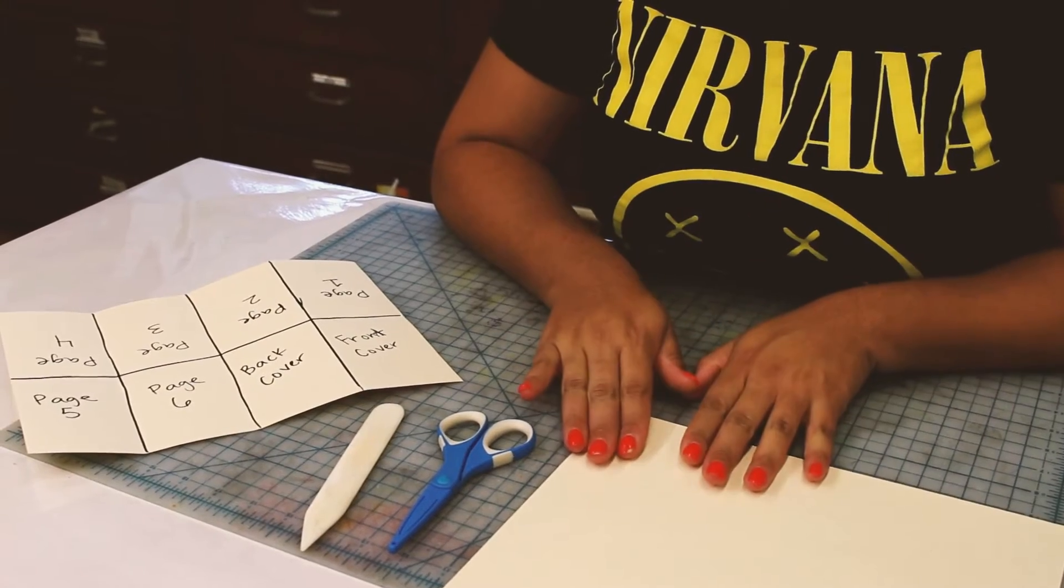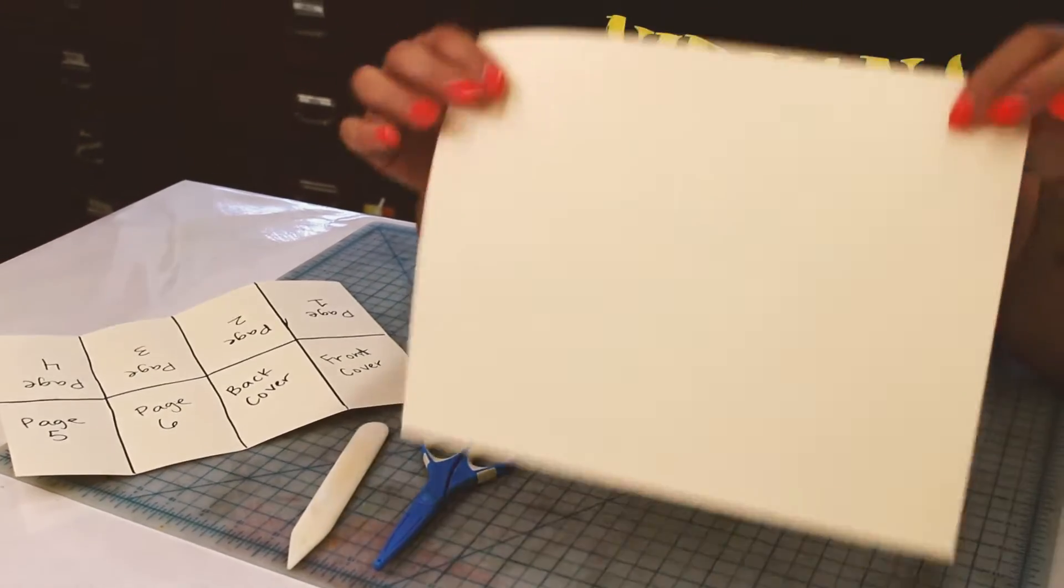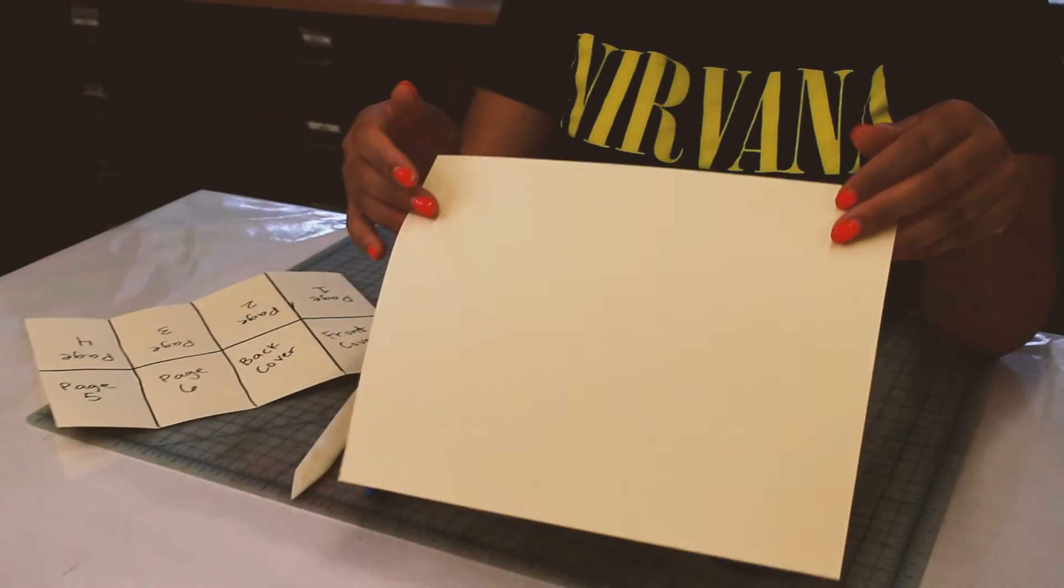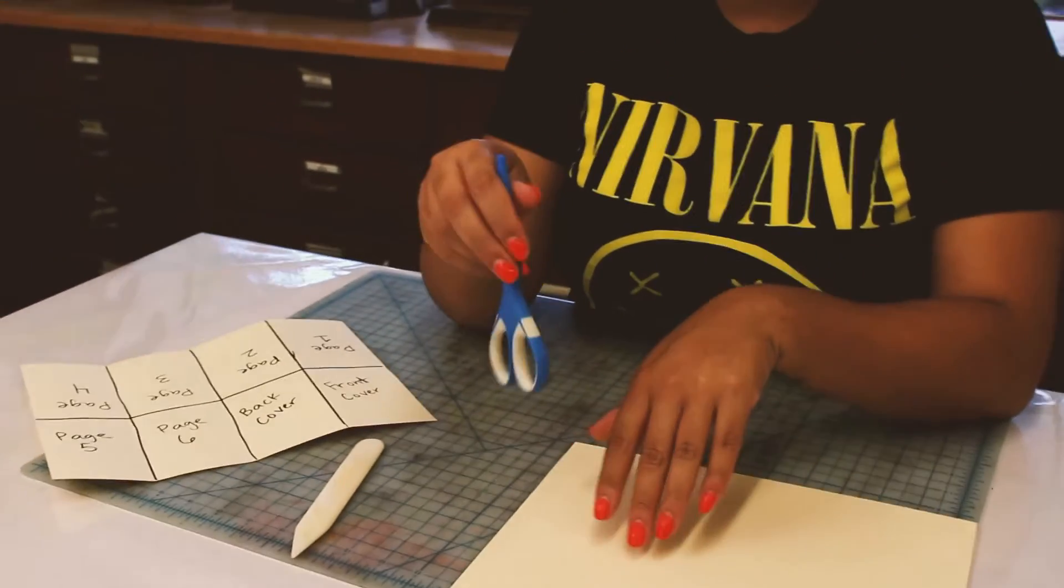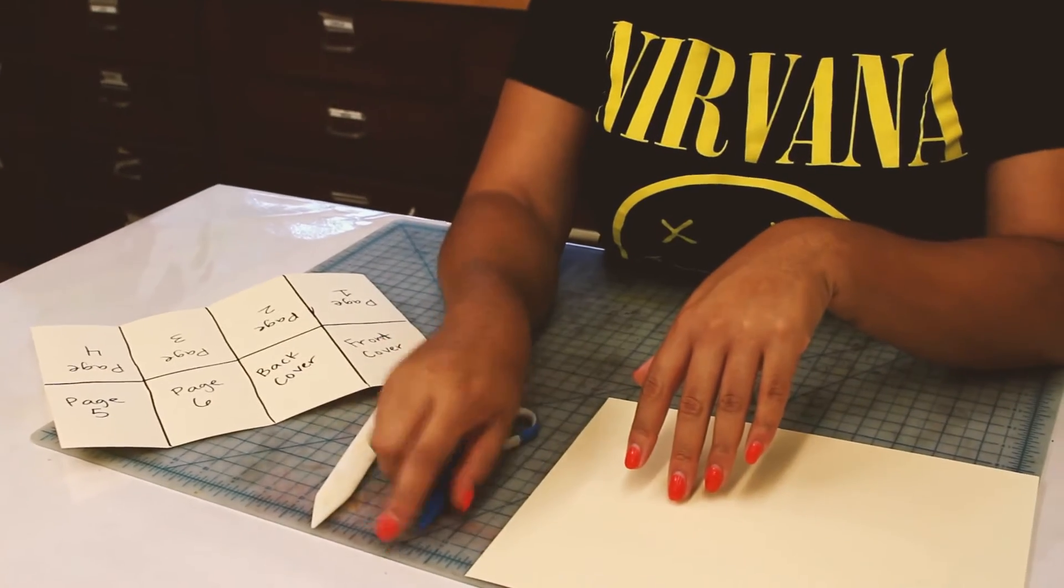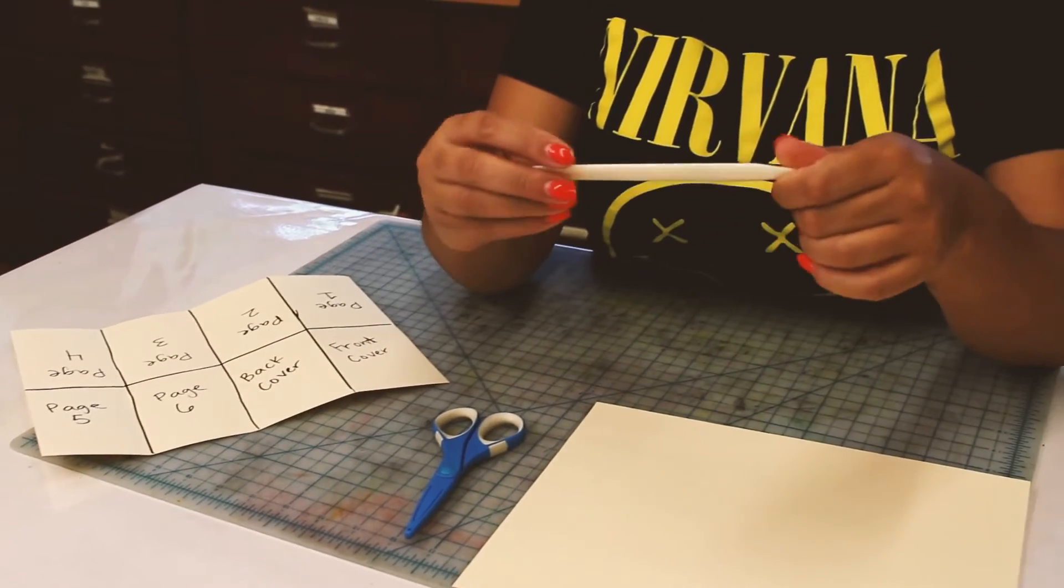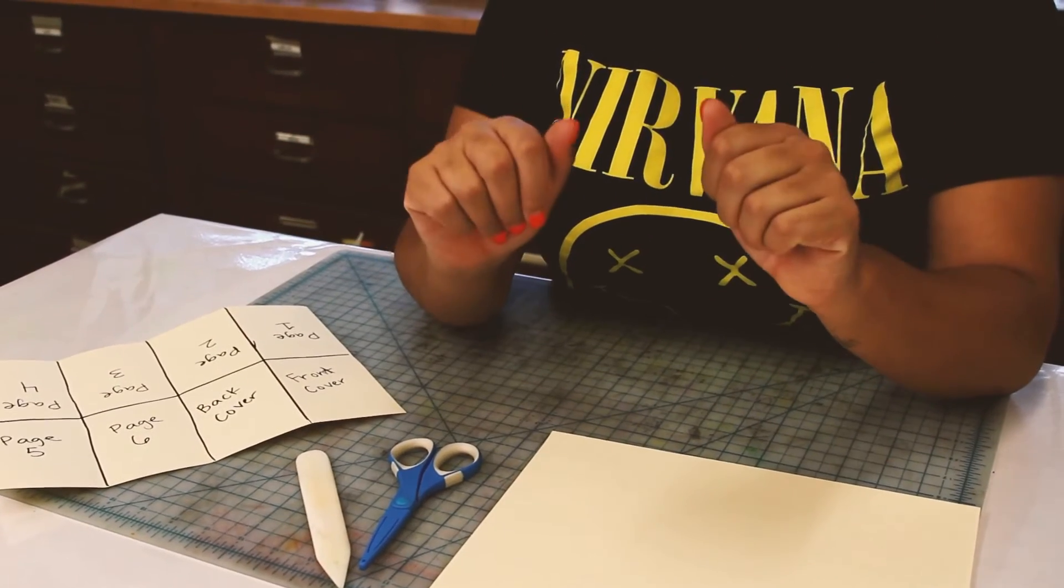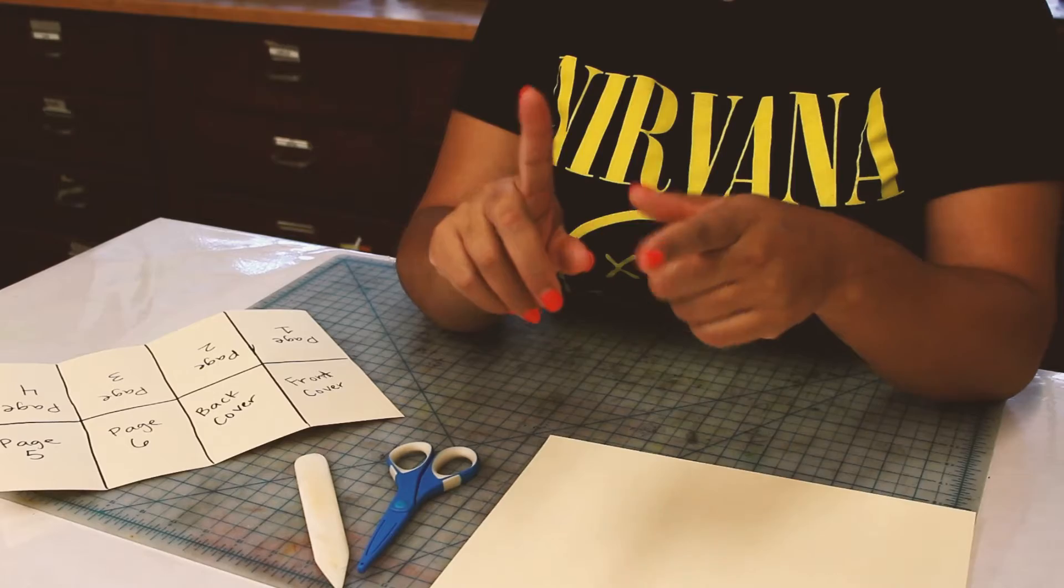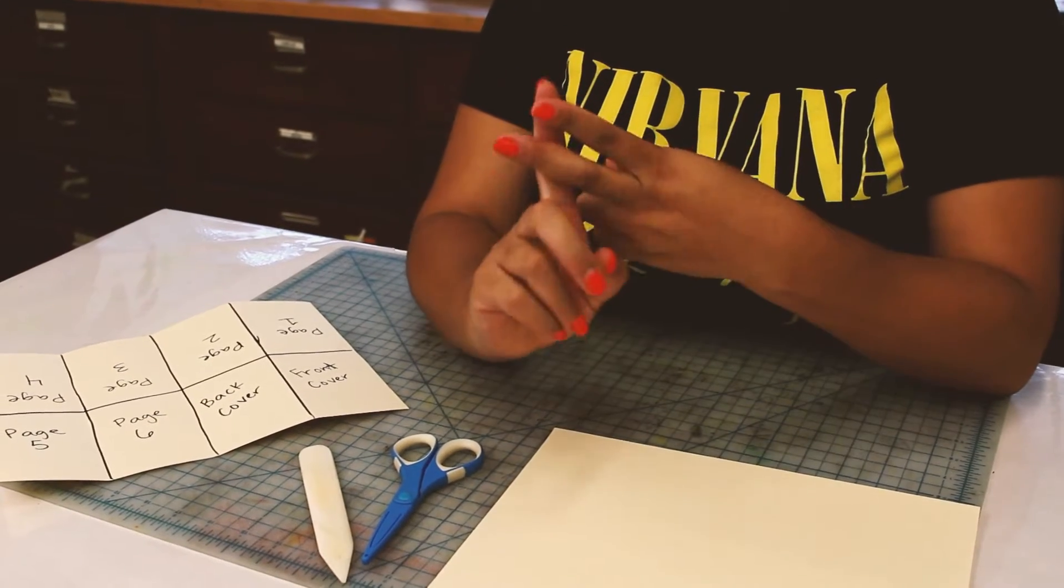There are three things you'll need. One is a piece of paper or multiple papers if you're making multiple zines, scissors for cutting, and if you have a bone folder that would be great for folding, or you can just use your hands or any household items like a pen or a spoon.